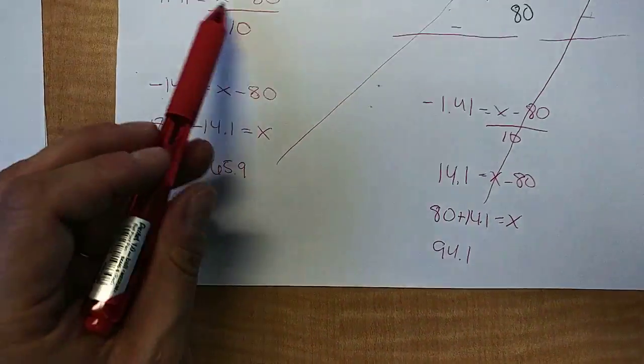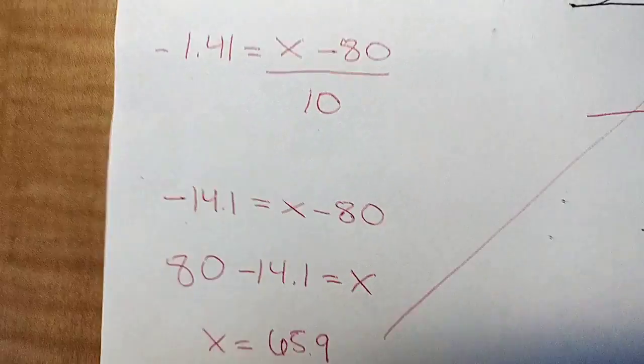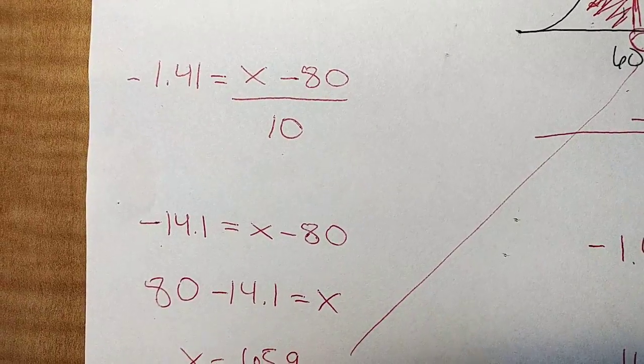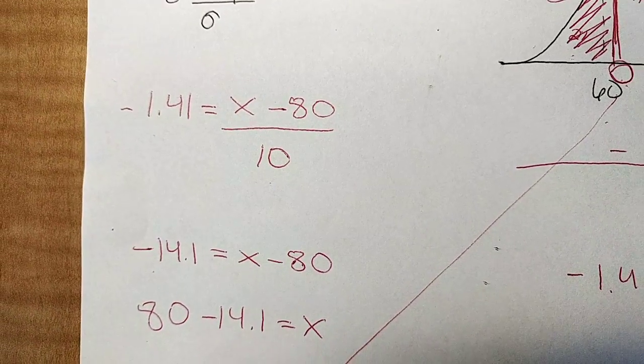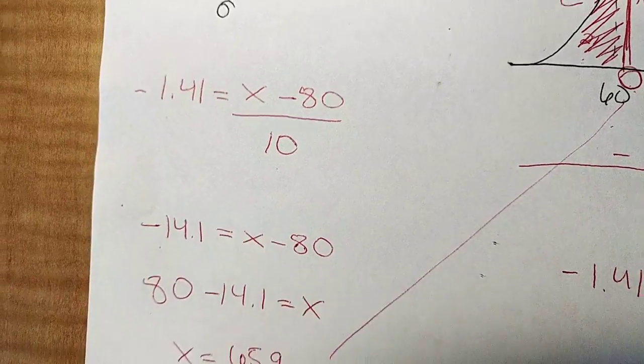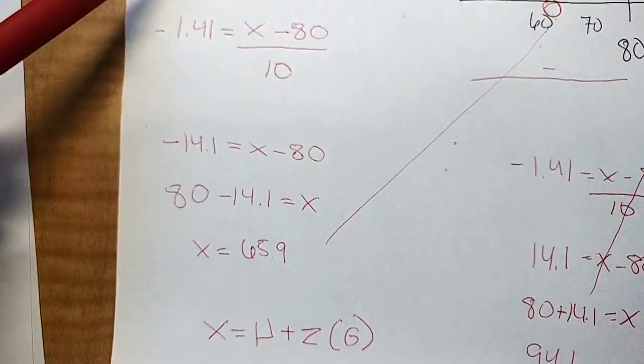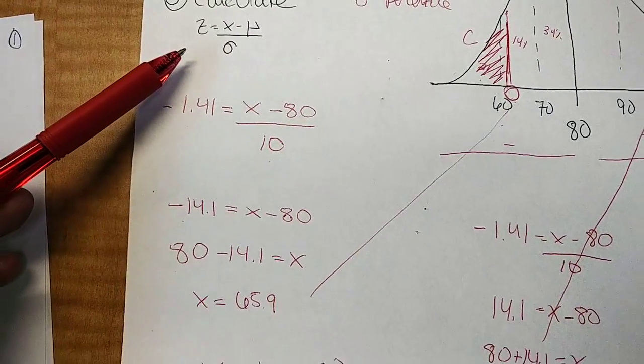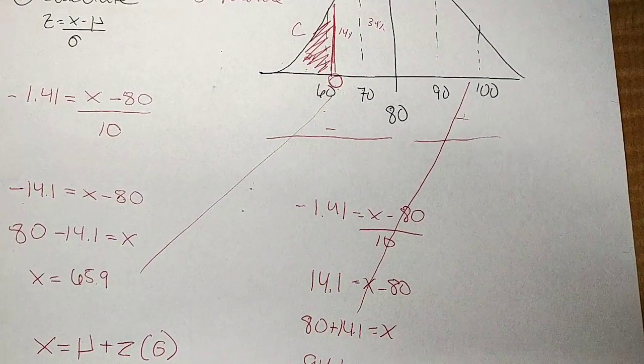And so you can solve it this way. Or if you like a formula that's already pre-written, if I move these things around for you, what it would be is X equals the mean plus the Z score times the standard deviation. This formula is exactly like the one above it. I just moved things around to make it a little bit easier for you. All right. There you go. Give it a go. And let me know if you don't get the right answer.